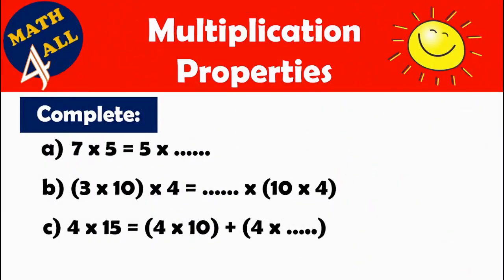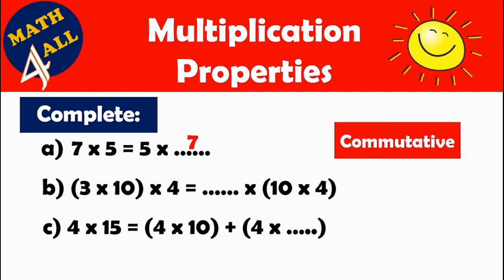Now let's solve this complete example. A: 7 by 5 equals 5 by what? What is this property? It's the commutative property. We know that changing the order of factors doesn't change the product, so 7 by 5 is the same as 5 by 7, which equals 35. This is called the commutative property.